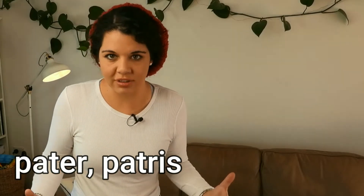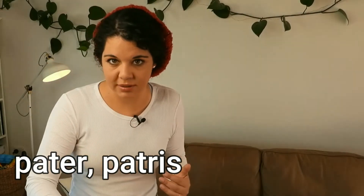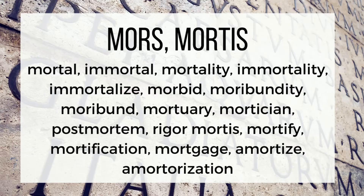For example, if you know the Latin word for father — pater or patrus — you know all these words: patriarch, patriarchal, patriarchy, paternal, paternalism, paternalistic, patrimony, patriot, patriotic, compatriot, expatriate, patronize, and patronizing. If you know the word for death — mors or mortis — then you know: mortal, immortal, mortality, immortality, immortalize, morbid, moribund, mortuary, post-mortem, rigor mortis, mortify, mortification, mortgage, and amortization.